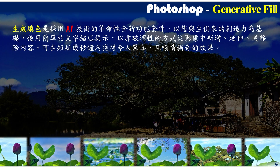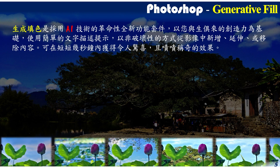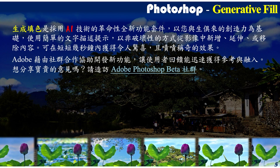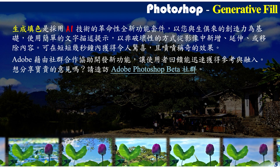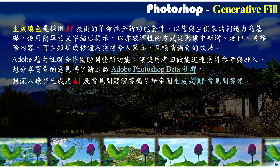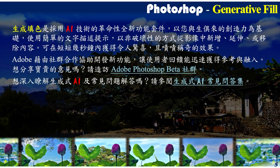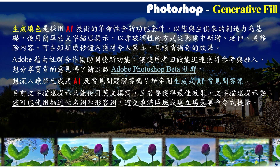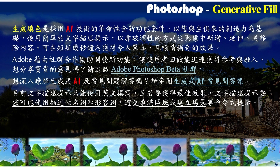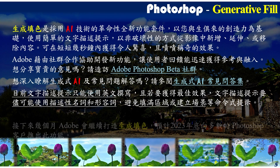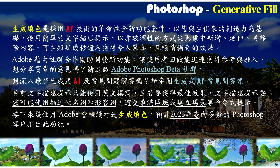生成填色是采用 AI 技术的革命性功能套件，使用简单的文字描述提示，以非破坏性的方式，从影像中新增、延伸或移除内容。藉由社群合作协助，Adobe 开发这些新功能。想分享宝贵意见，请造访 Adobe Photoshop Beta 社群；想了解生成式 AI 及常见问题解答，请参与生成式 AI 常见问答区。目前文字描述提示只能使用英文撰写，且建议提示尽可能使用描述性形容词和名词。Adobe 预计 2023 年底推出此新功能。